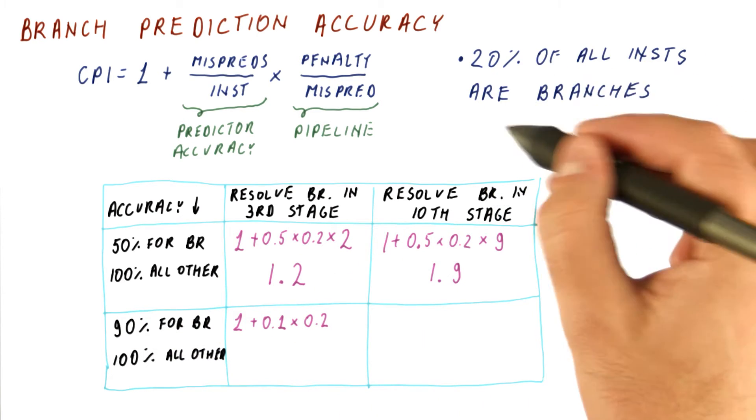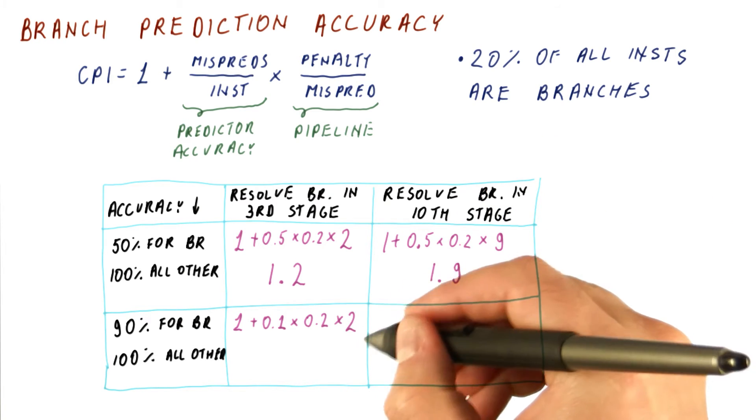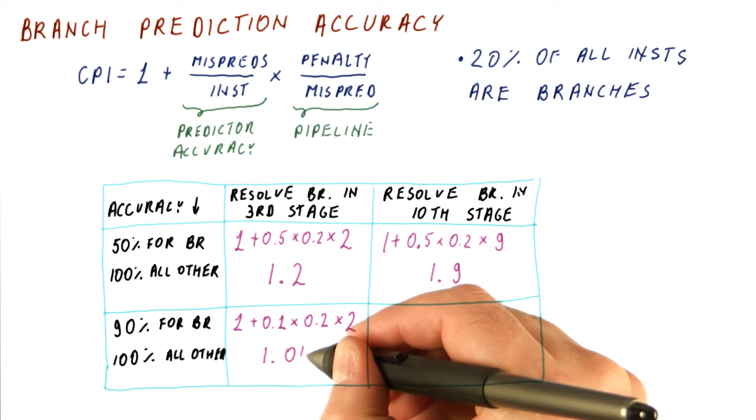Times 0.2, because not all instructions are branches, times 2, which is our penalty. And we end up with 1.04.